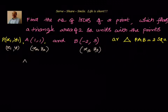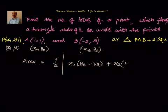What's the formula for area? Area of triangle equals half into absolute value of x1(y2-y3) plus x2(y3-y1) plus x3(y1-y2). This is the area of the triangle.